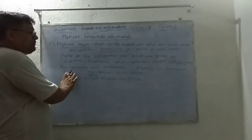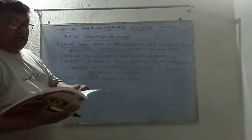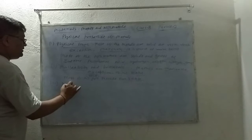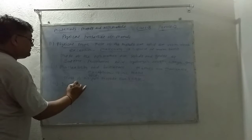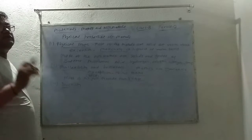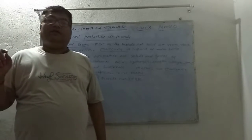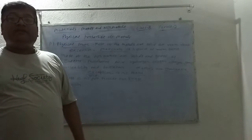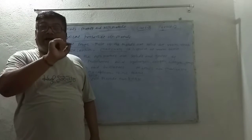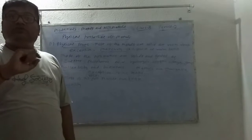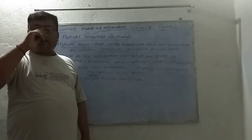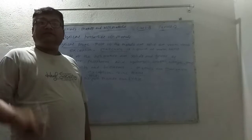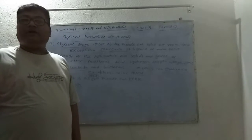That property is called malleability — metals can be beaten into thin sheets. It can also be stretched into thin wires. Examples include aluminum, copper, and gold.